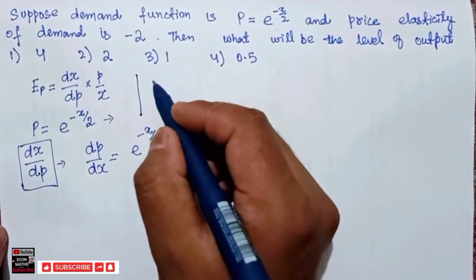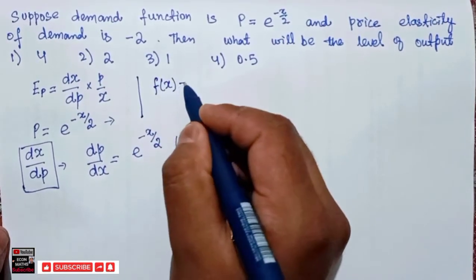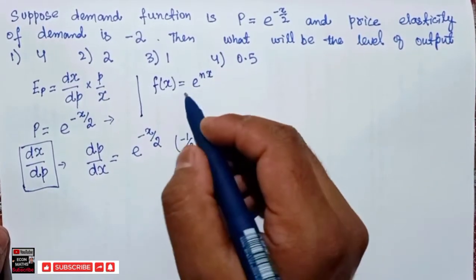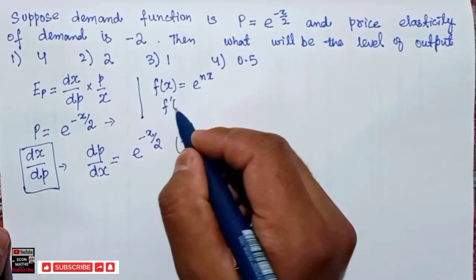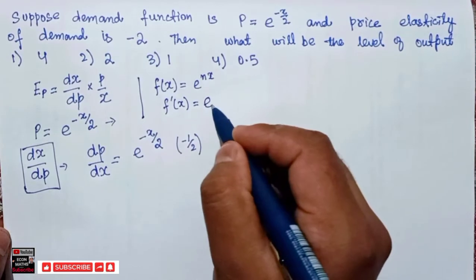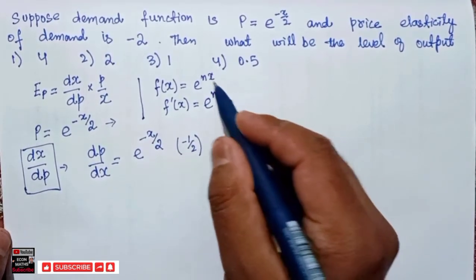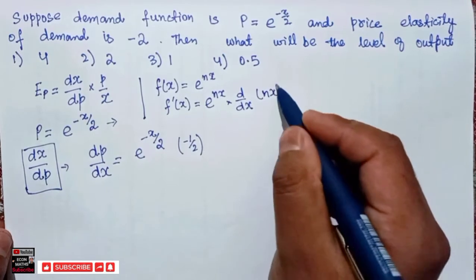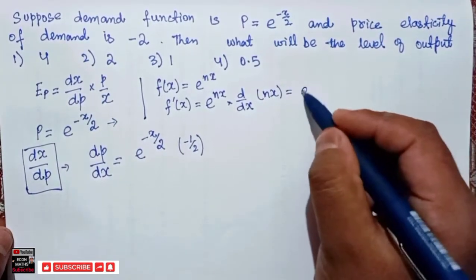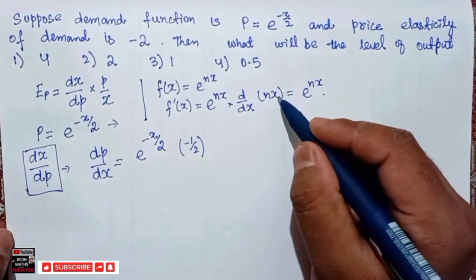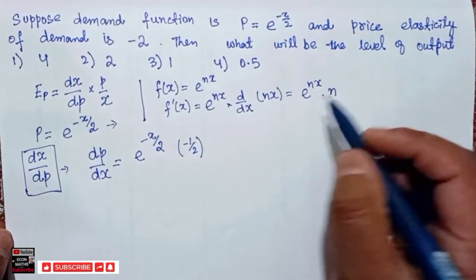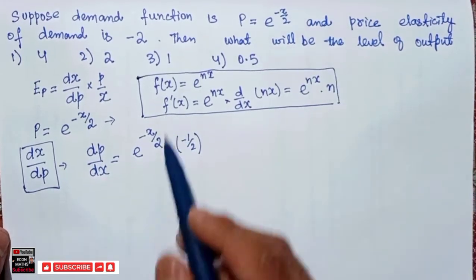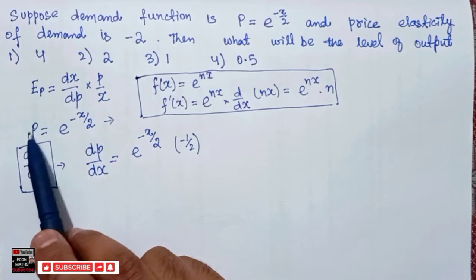Let me explain the rule: if f(x) is equal to e to the power nx, then its derivative is e to the power nx times the derivative of nx, which is n times 1, so it equals n times e to the power nx. I am giving this example to show how we find the derivative of an exponential function. I then applied this rule to the inverse demand function.